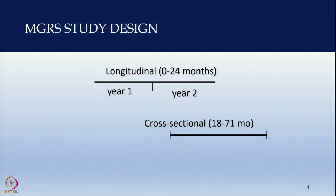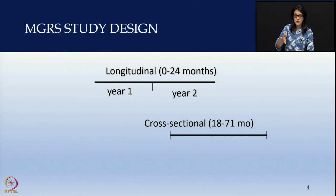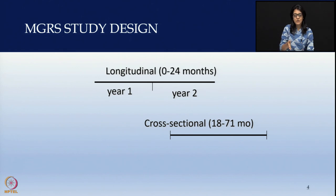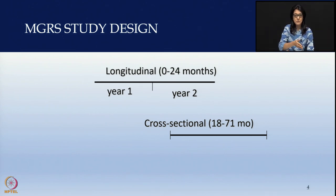The study took longitudinal data for 0 to 24 months of age, monitoring children on a regular basis, measuring height and weight from birth till 2 years of age. For children 18 months to 71 months, they took cross-sectional data — collected at one particular point in time. Longitudinal data means collecting data of the same child repeatedly over a period of 2 years.